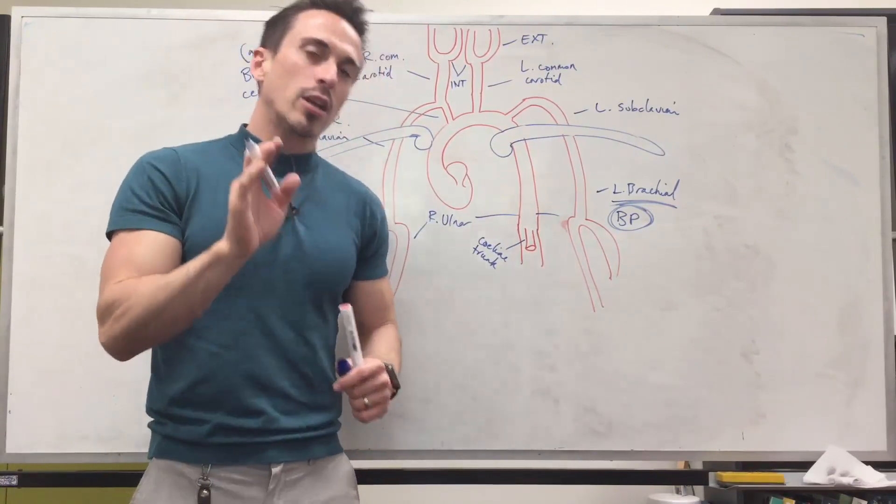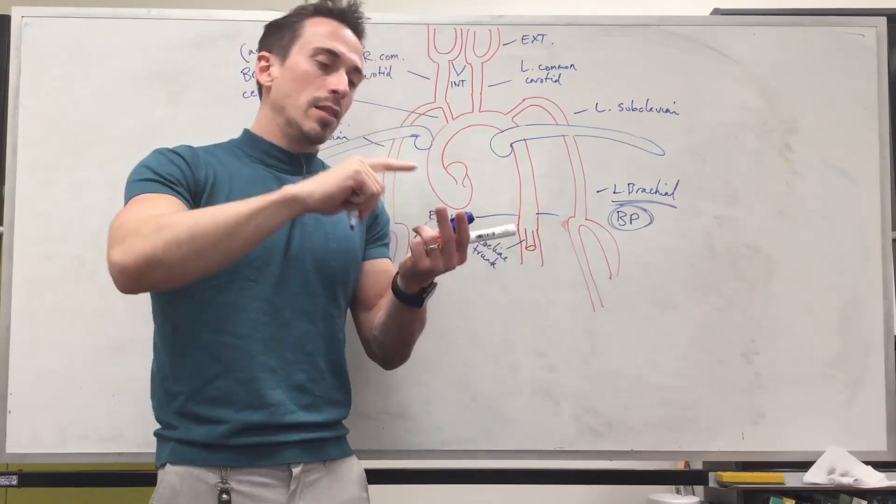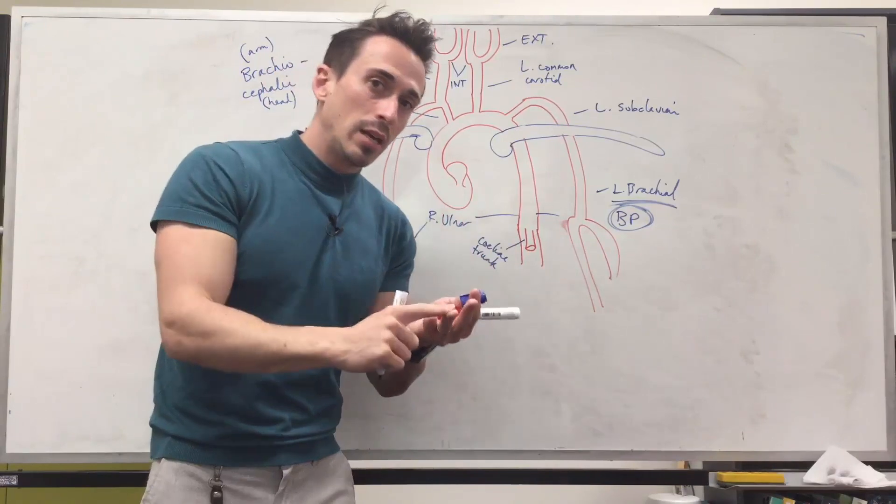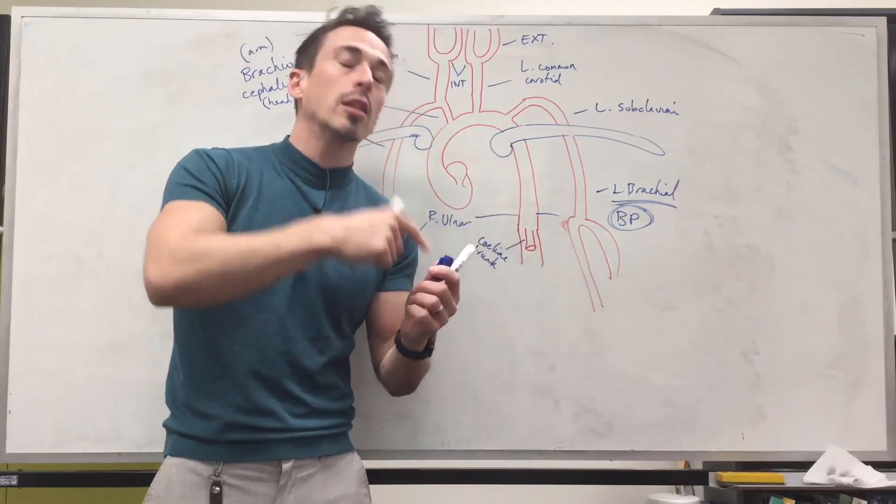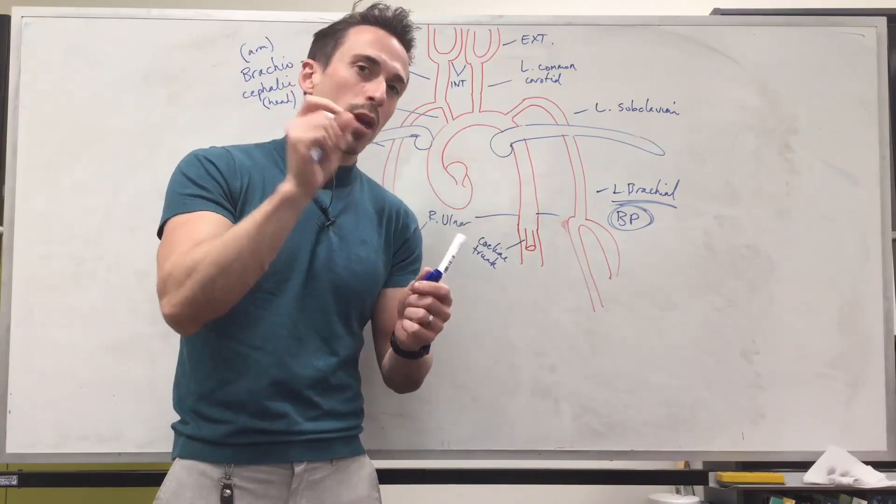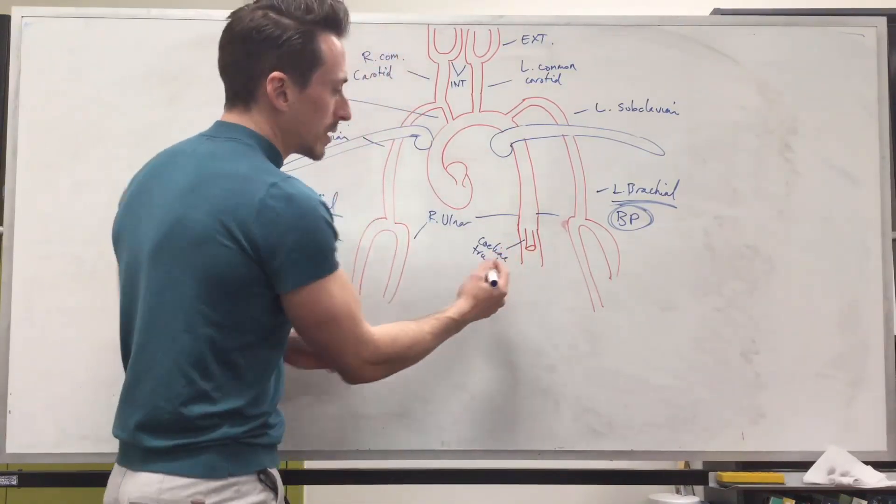These branches are going to feed the liver, the stomach, the spleen, the pancreas, the lowest part of the esophagus and a very minor part of the small intestines. That's what the celiac trunk does.